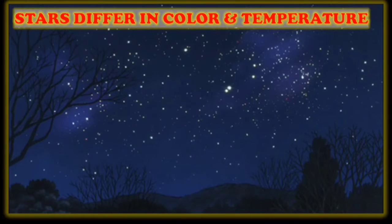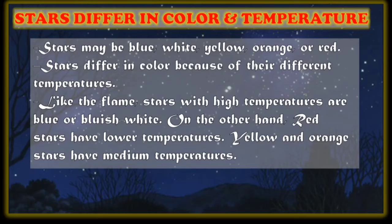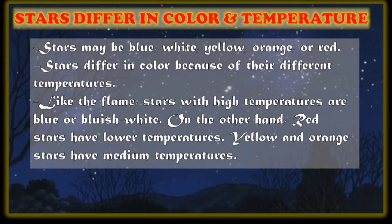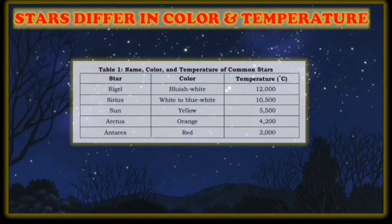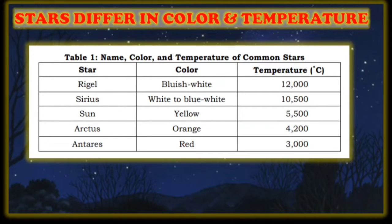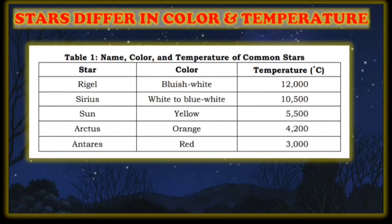Stars also differ in color and temperature. Stars may be blue, white, yellow, orange, or red. Stars differ in color because of their different temperatures. Like a flame, stars with high temperatures are blue or bluish-white. On the other hand, red stars have lower temperatures. Yellow and orange stars have medium temperatures. As you can see in the table, bluish-white and white to blue-white stars have high temperatures — examples are Rigel and Sirius. The coldest temperature stars are Arcturus and Antares. So the temperature depends on their color — nagdidepende ang temperature based on their color.